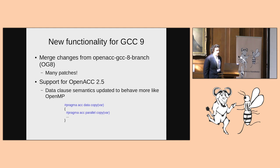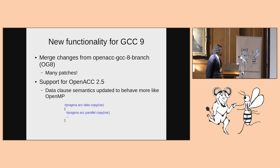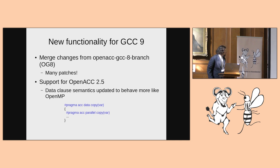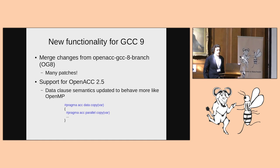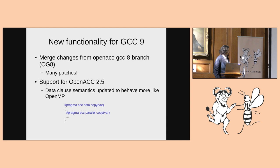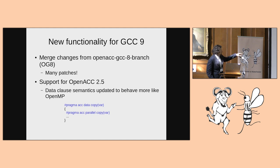One of the bigger changes is support for OpenACC 2.5. At present, GCC only supports OpenACC 2.0. A major change is the data clause semantics. In OpenACC 2.0, there were two variants of every data clause: copy and present-or-copy. Present-or-copy meant if the variable has already been loaded on a device, don't bother uploading it again. In the code snippet shown, there's an external data region followed by a parallel loop that copies that variable — in 2.0 that would be an error because the variable is already live on the GPU, but in 2.5 it's perfectly acceptable.